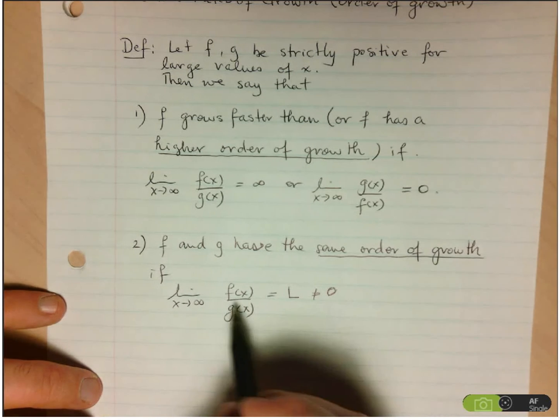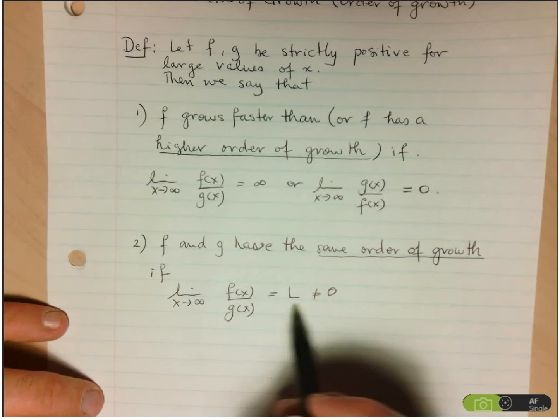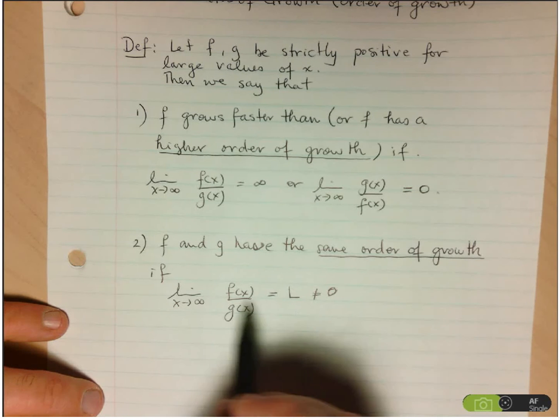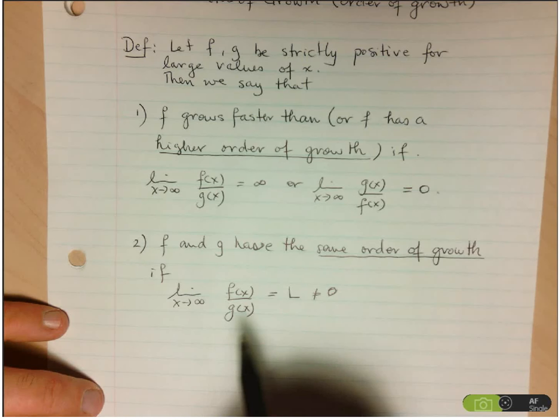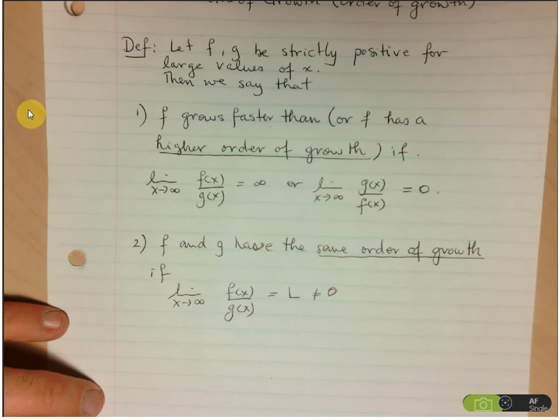So, as long as the limit approaches some fixed number that's not equal to zero, and obviously L will be positive, since we're assuming that all these numbers are positive, we say that they have the same order of growth.